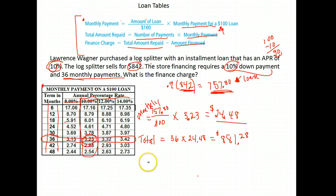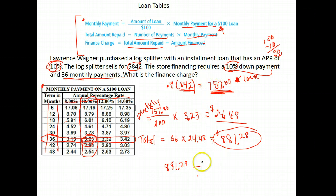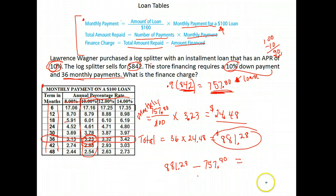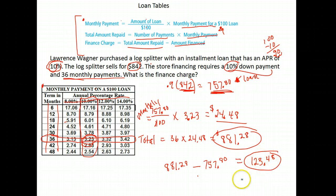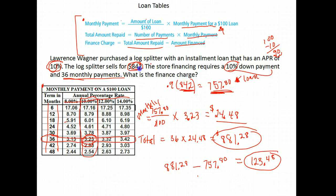To find the finance charge — our last step — we take the total amount we paid back, eight hundred and eighty-one dollars and twenty-eight cents, and subtract from that the amount of our loan, which was seven hundred and fifty-seven dollars and eighty cents. When we do that we get one hundred and twenty-three dollars and forty-eight cents.